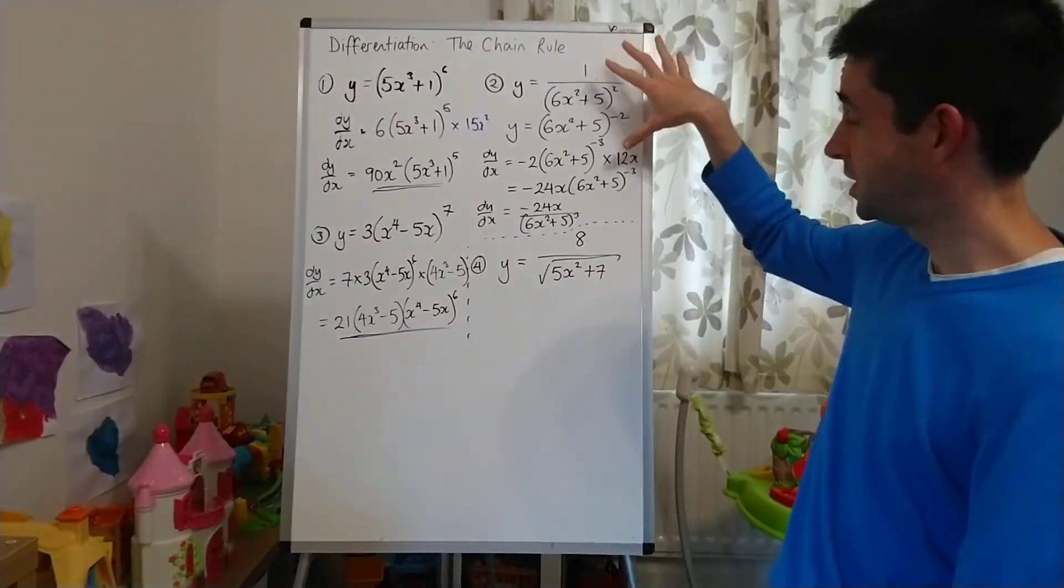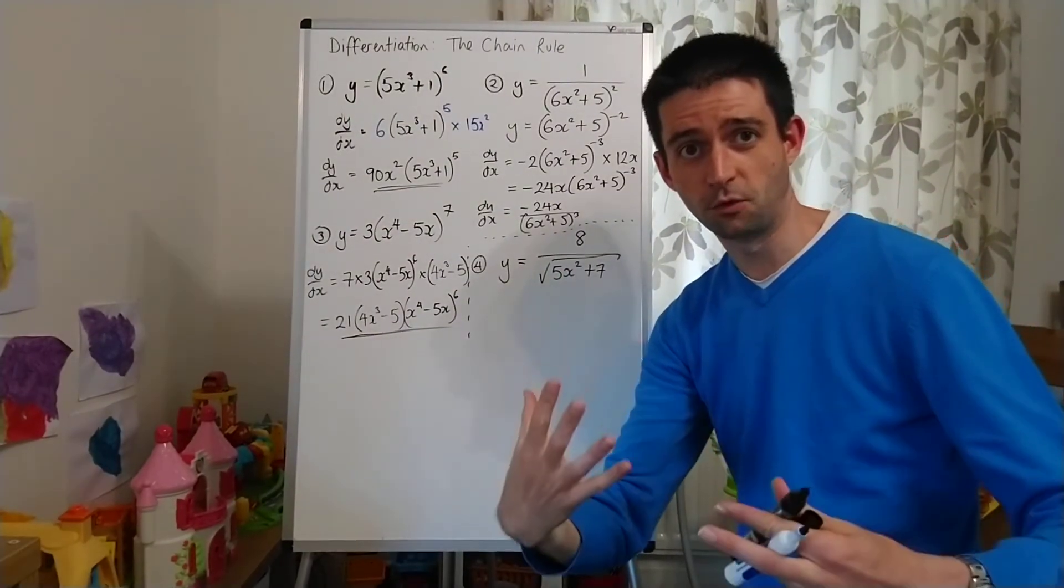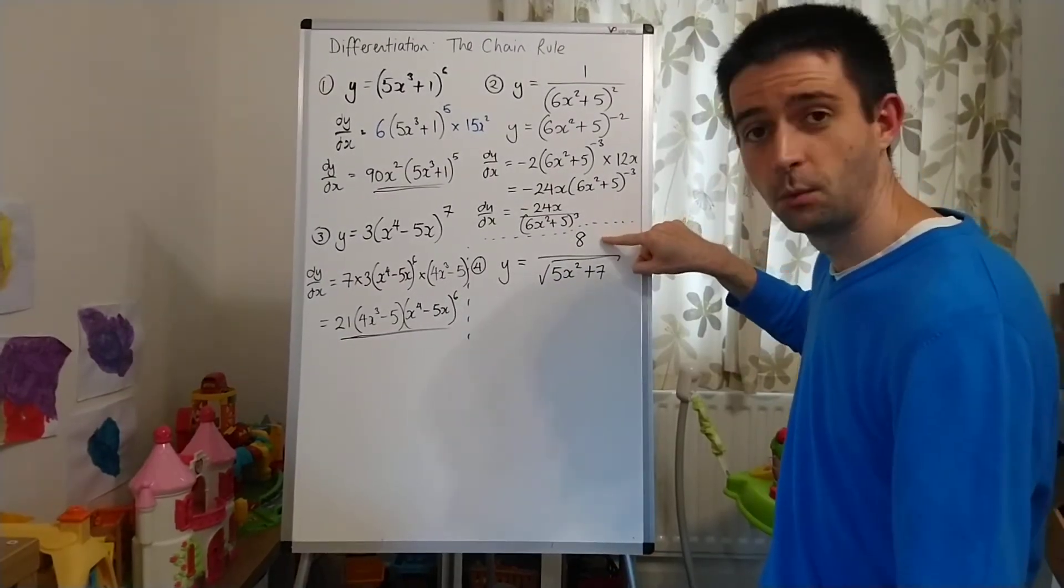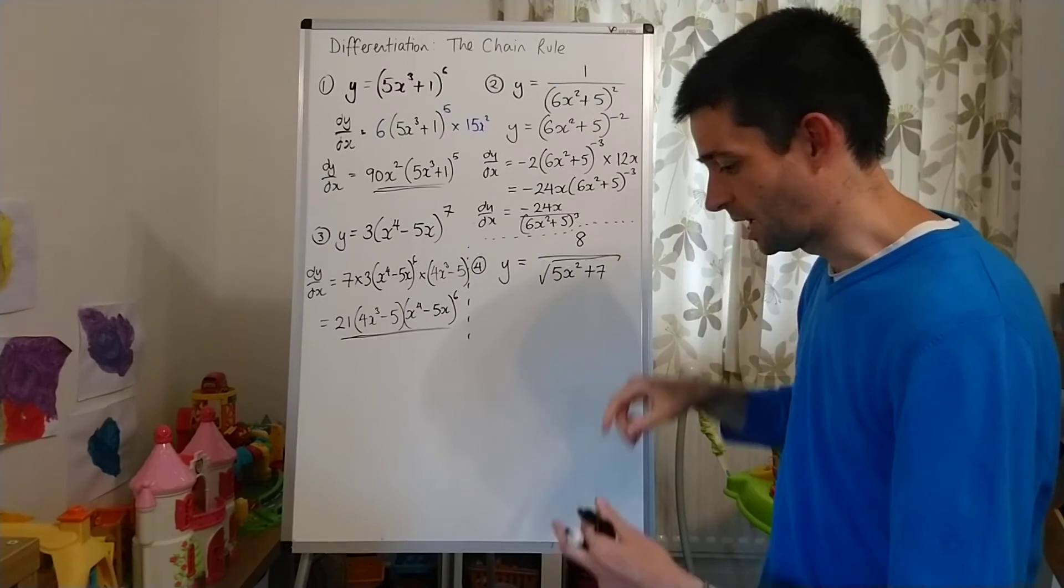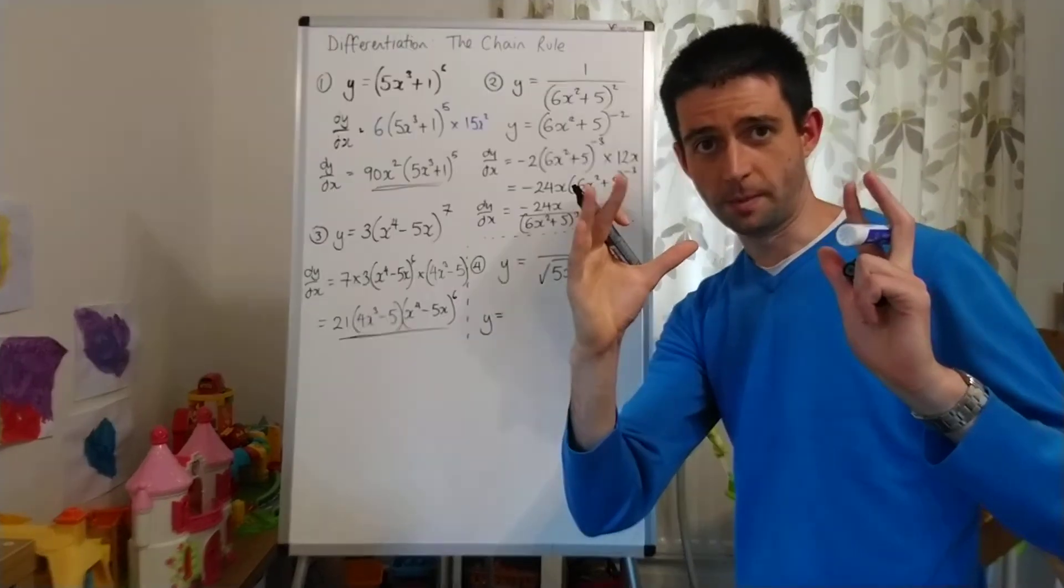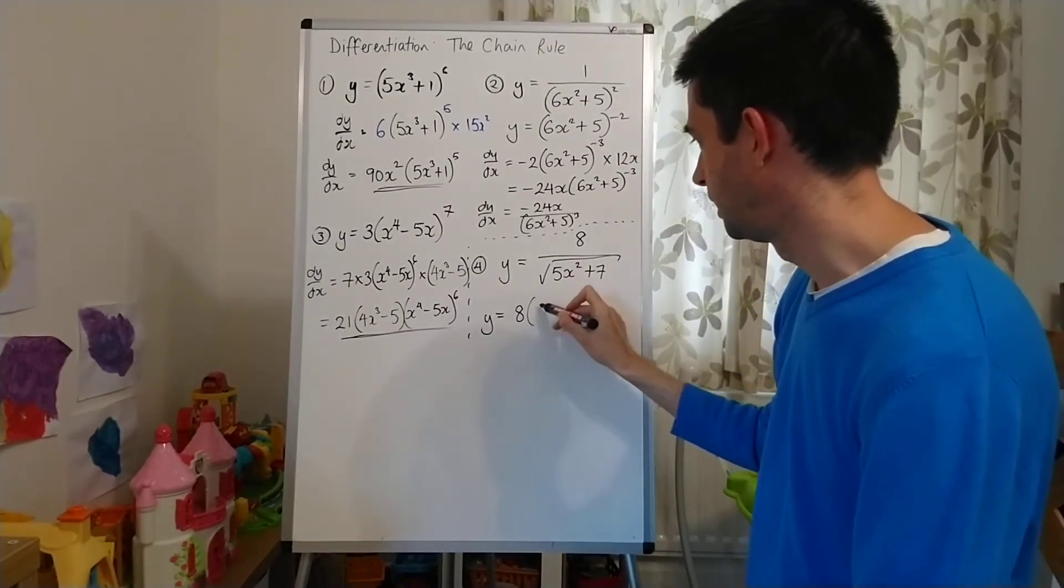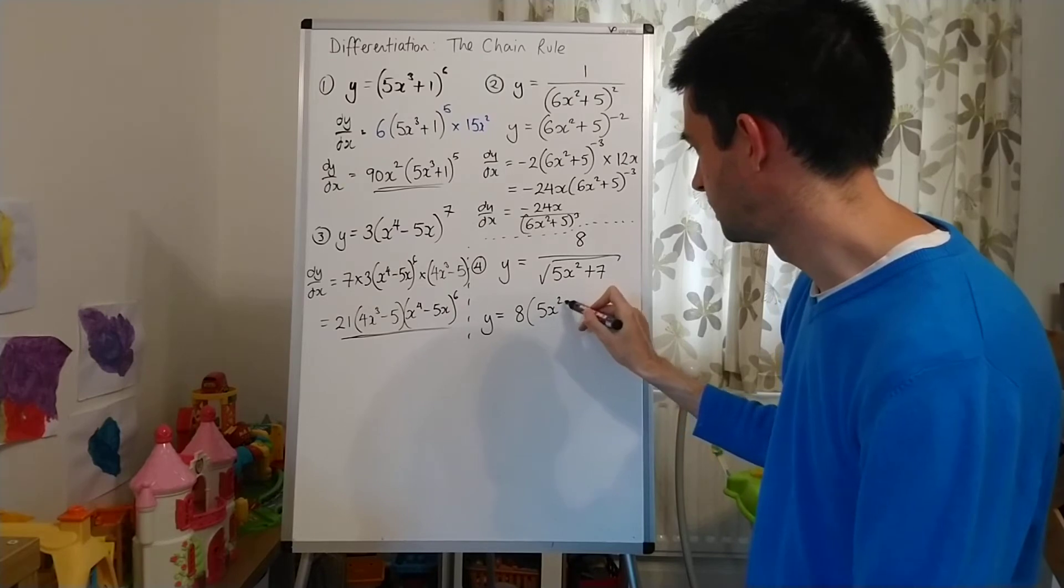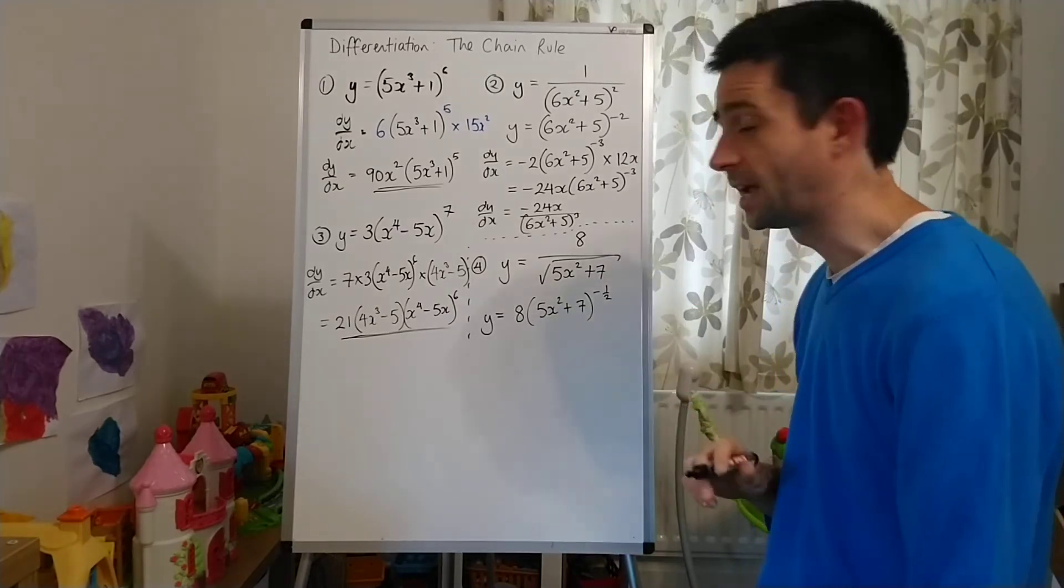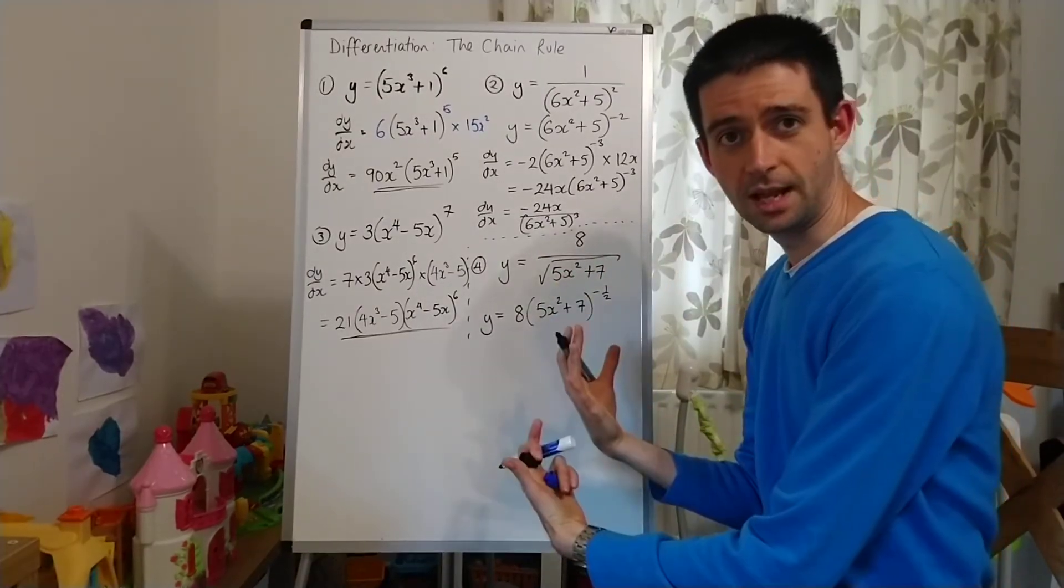Finally, number 4. Similar to this one in that we don't have it as a function to a power. We have a fraction. So we've got to deal with that first. We've got to be very, very careful with that 8. Now, that 8, when we put this into function to a power form, that 8 belongs at the front. It's going to then be 8(5x²+7)^(-1/2). So square root is power 1/2. When it comes up, it's negative.